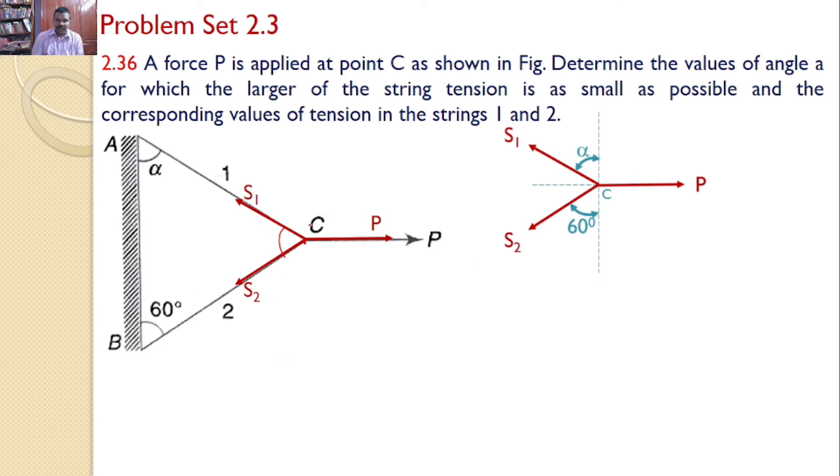Then what about the angle between S1 and S2? By considering this triangle, so the angle between S1 and S2 will be 120 minus alpha. Hence this angle becomes 120 minus alpha.